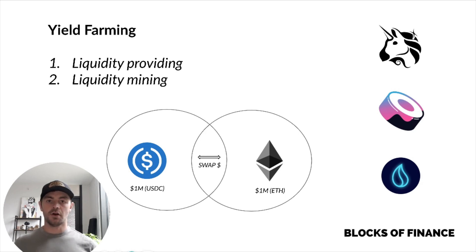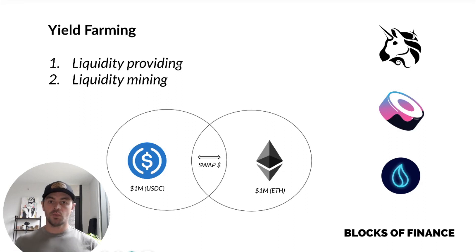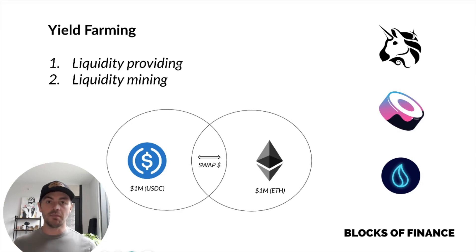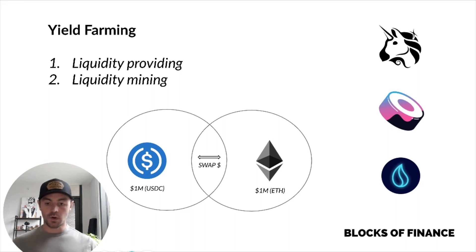There are a lot of different types of yield farming and a lot of different strategies you can employ to earn yield in crypto. But two of the most common are liquidity providing and liquidity mining, which are very similar and related strategies. If you're getting started with yield farming, this is likely where you'll start. And even if you're more advanced and moving around a lot of money, liquidity providing and liquidity mining are still very likely to be a large part of what you're doing.